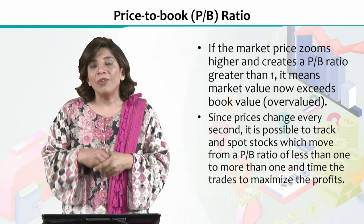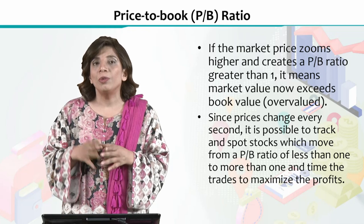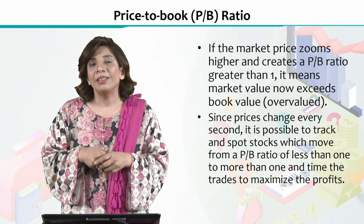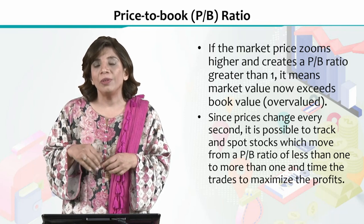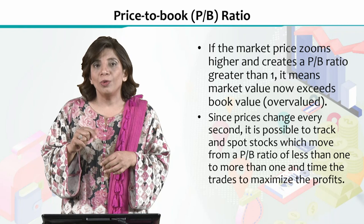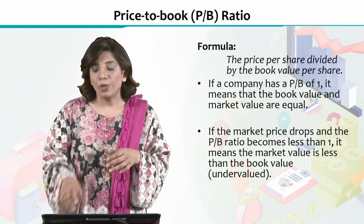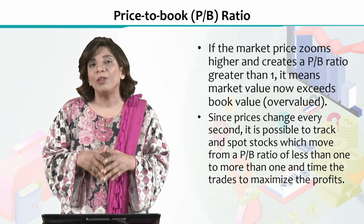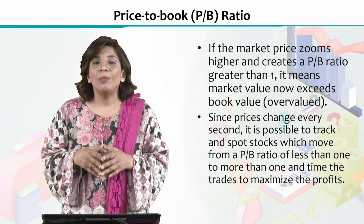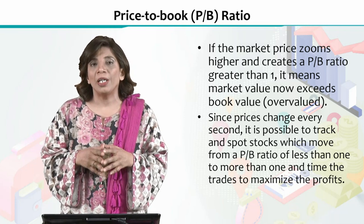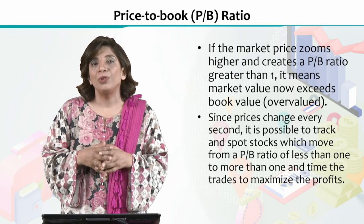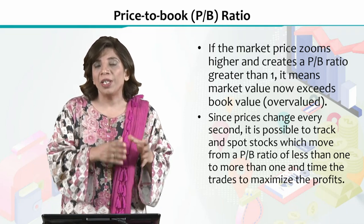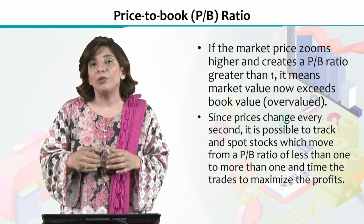On the contrary, there is a possibility that the market price is higher as compared to the book value. In this case, the Price to Book Ratio value will be greater than 1, because the numerator value is larger than the denominator. So we will say that in this case the share is overvalued — meaning that investors are giving more value to this particular company's share as compared to what the financial statements reflect.